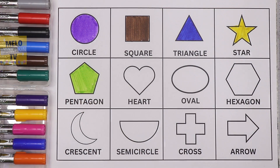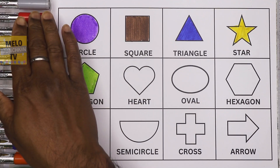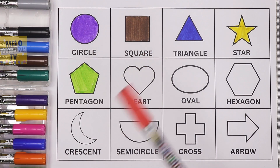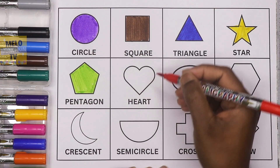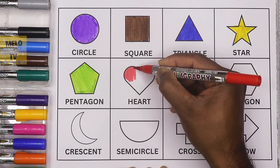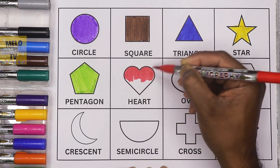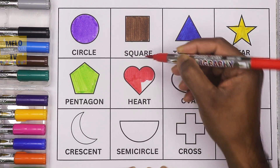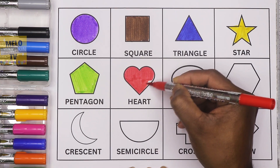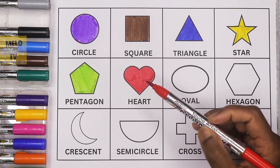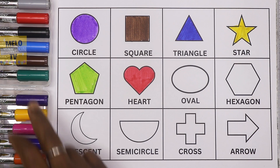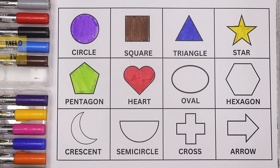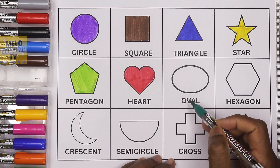Next I'll take red color — this is red color — to color this shape. This is a heart. So this is a red heart. Next I'll take dark green color to color this shape. This is an oval.